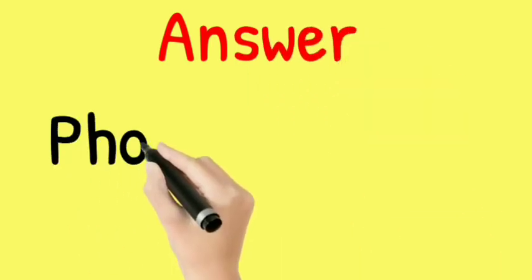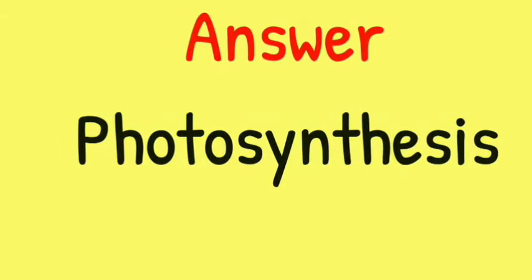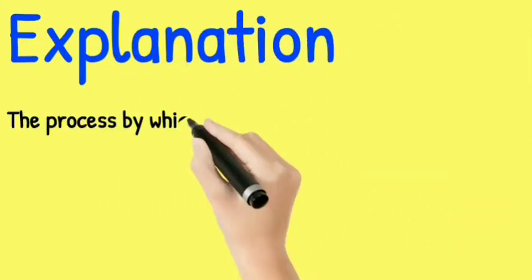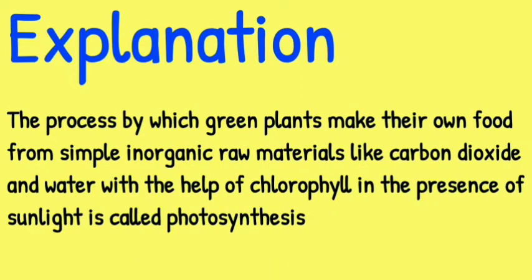The answer for this question is option number 2, which is Photosynthesis. Explanation: The process by which green plants make their own food from simple inorganic raw materials like carbon dioxide and water, with the help of chlorophyll in the presence of sunlight, is called photosynthesis.